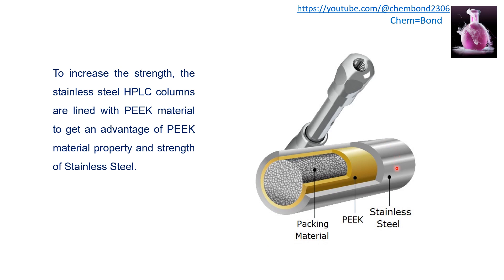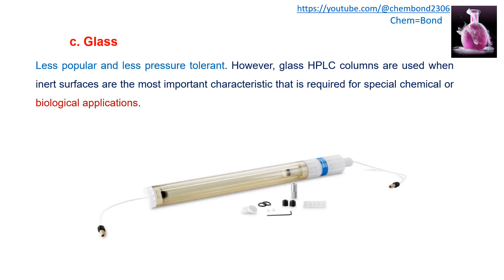Stainless steel provides mechanical strength and withstands high pressure, while PEEK offers chemical and mechanical resistance at high temperatures. To combine both advantages, stainless steel HPLC columns are lined with PEEK material, giving the benefits of PEEK's properties along with the strength of stainless steel in a single column. Glass columns are less popular and less pressure tolerant, but are used when inert surfaces are the most important characteristic required for special chemical or biological applications.